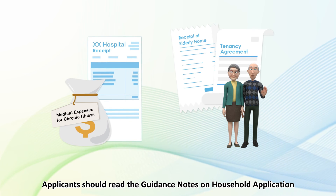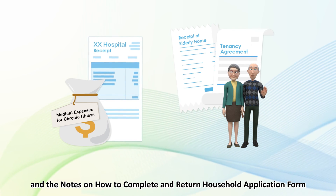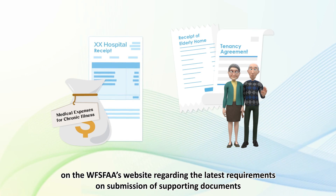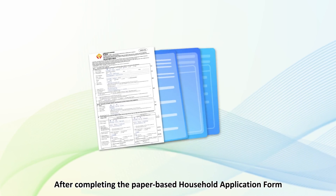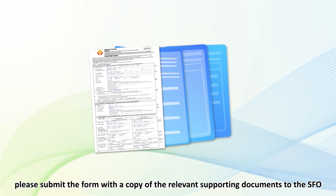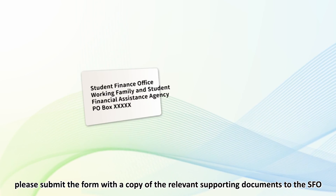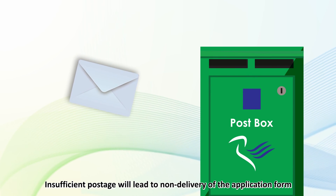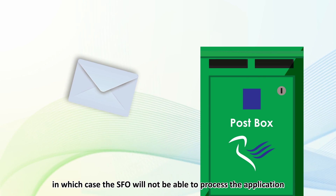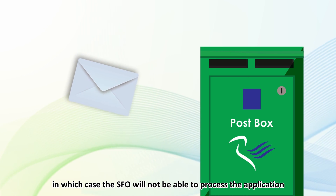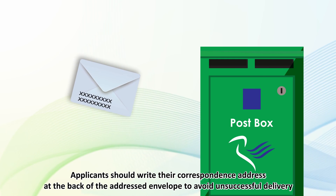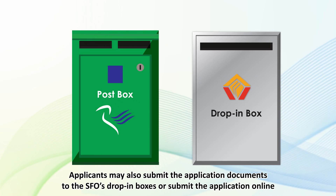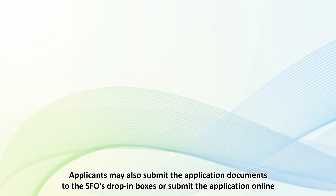Applicants should read the guidance notes on household application and the notes on how to complete and return household application form on the WFSFAA's website regarding the latest requirements on submission of supporting documents. After completing the paper-based household application form, please submit the form with a copy of the relevant supporting documents to the SFO by post using the addressed envelope provided. Please affix sufficient postage, as insufficient postage will lead to non-delivery of the application form. Applicants should write their correspondence address at the back of the addressed envelope. Applicants may also submit the application documents to the SFO's drop-in boxes.